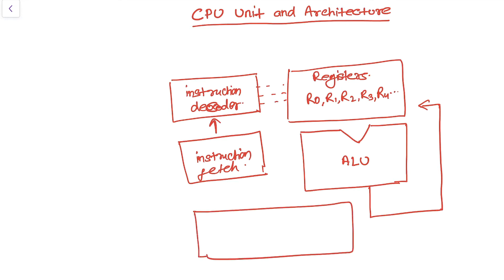There is also memory, which is connected with the registers as well as with the ALU. The instruction is fetched from memory, then it is decoded, and then finally it is fed into the registers. The ALU performs operations on the register set and finally writes back the results either into the registers or into the memory.